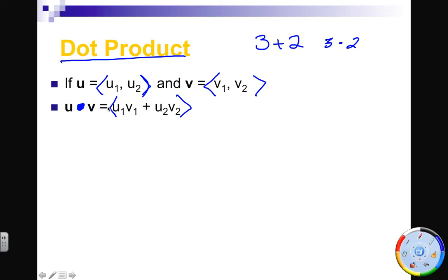u dot v is a very simple process: take the x-coordinate of the first vector times the x-coordinate of the second vector, and add it to the y-coordinate times the y-coordinate, and you get a number. So the dot product results in a constant.